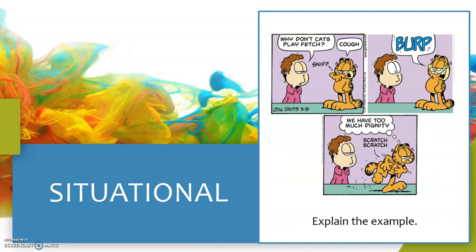As with all the previous videos, pause the video at this point, have a look at the example, and once you've given it a good bash at explaining it, carry on playing the video to see how right you were. In this example we've got John in the Garfield comic asking Garfield why cats don't play fetch, and Garfield sniffs, coughs, gives a burp, then walks away scratching himself and says 'we have too much dignity' — referring to why cats don't play fetch.